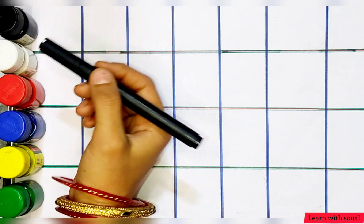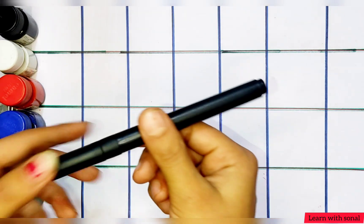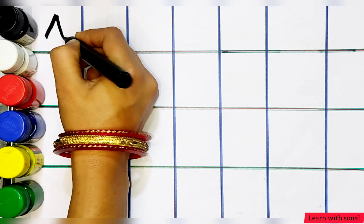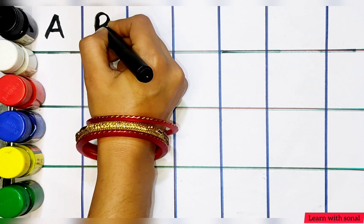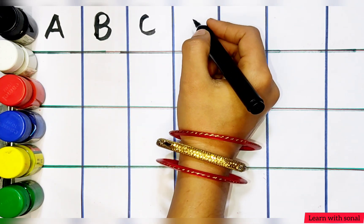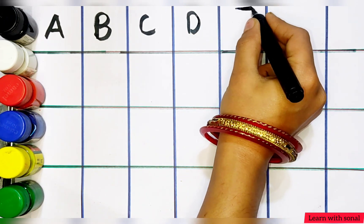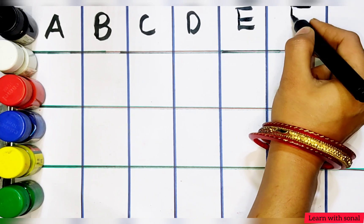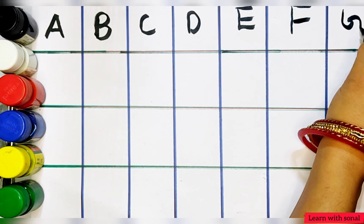Black color, white color, red color, blue color, yellow color, green color, black color. A. A for apple. B. B for ball. C. C for cat. D. D for dog. E. E for elephant. F. F for fish. G. G for girl.